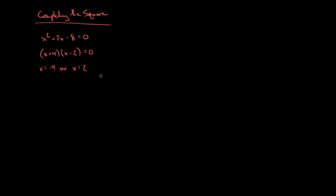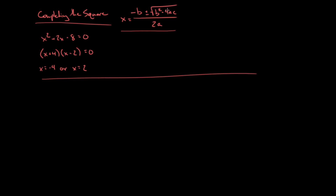But let's say I can't come up with two numbers that multiply to be negative 8 and add to be 2. What I can always fall back to is the quadratic formula, which says x equals the opposite of b, plus or minus the square root of b squared minus 4ac, all over 2a. But where does this formula come from? And not all quadratics will factor nicely into integer values.